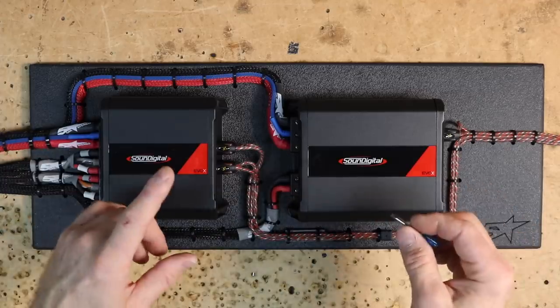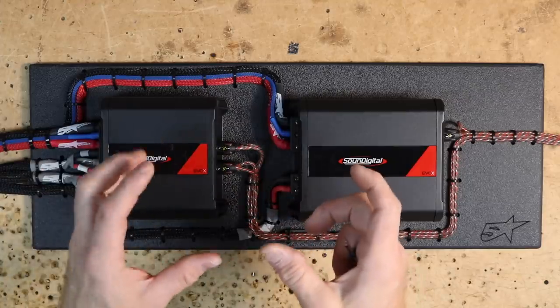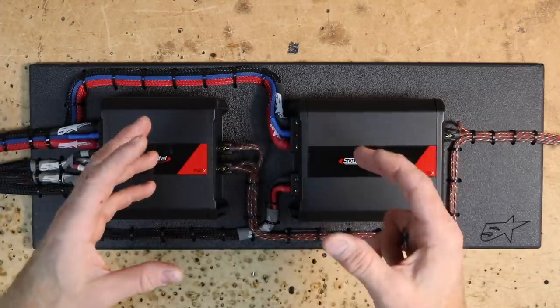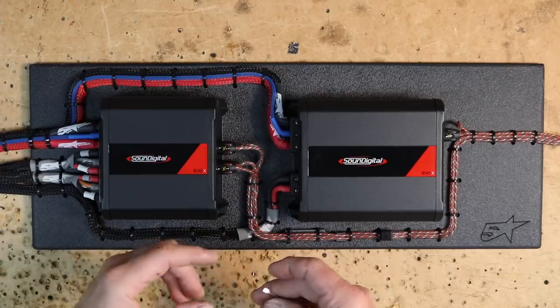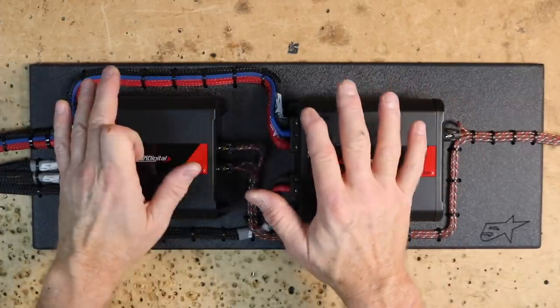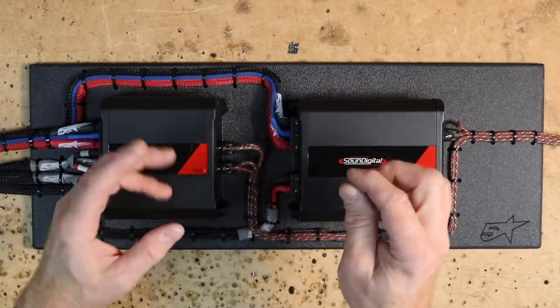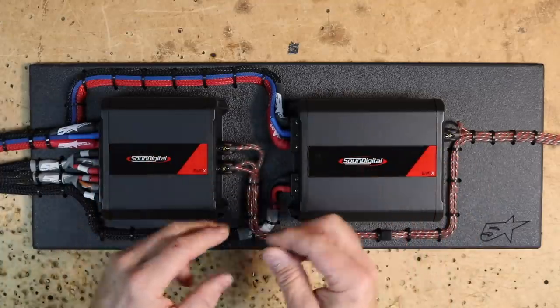With our wiring all done, the last thing I want to do is turn my gains all the way down and then get it in the car and we're going to show you how to set the gain structure up according to the instructions that came with the amplifiers. You always want to check the gains. Some manufacturers ship their amplifiers with the gains all the way down. Some ship them with the gains all the way up. Either way, it's good practice to check them before you get them into the car.